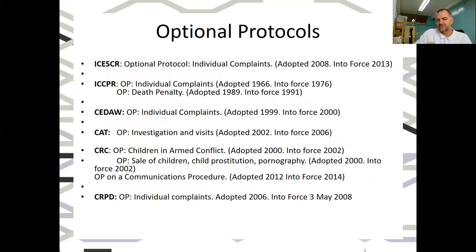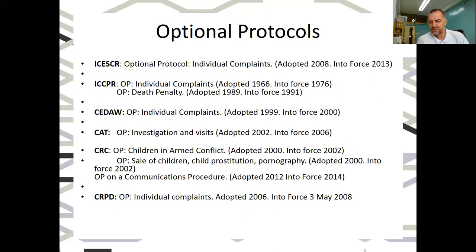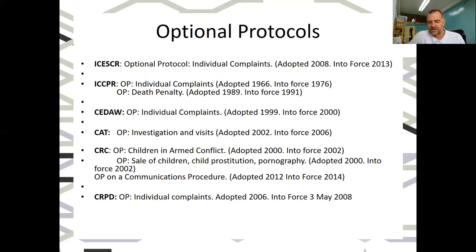Alongside the nine core treaties, six of them have optional protocols. The most common optional protocol is on individual complaints, which allows individuals to make complaints to the treaty body of the United Nations — these exist for ICESCR, ICCPR, CEDAW, CRC, and disability. The other type of optional protocol adds certain rights or articles, such as those on the death penalty, children in armed conflict, and child trafficking and prostitution.